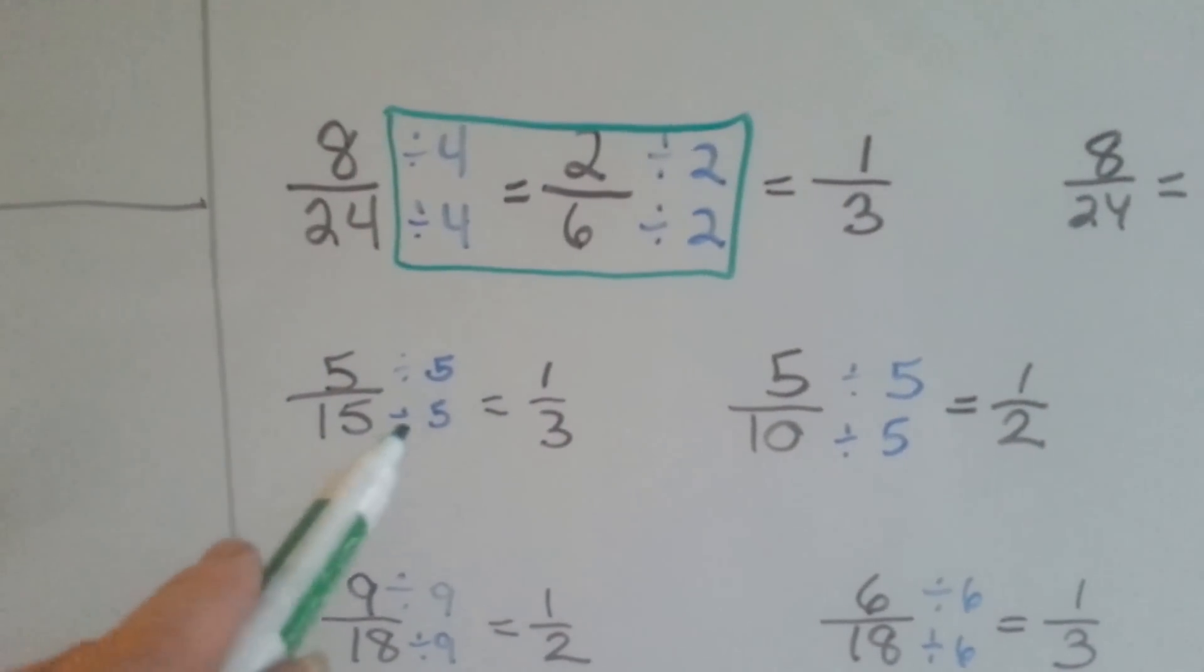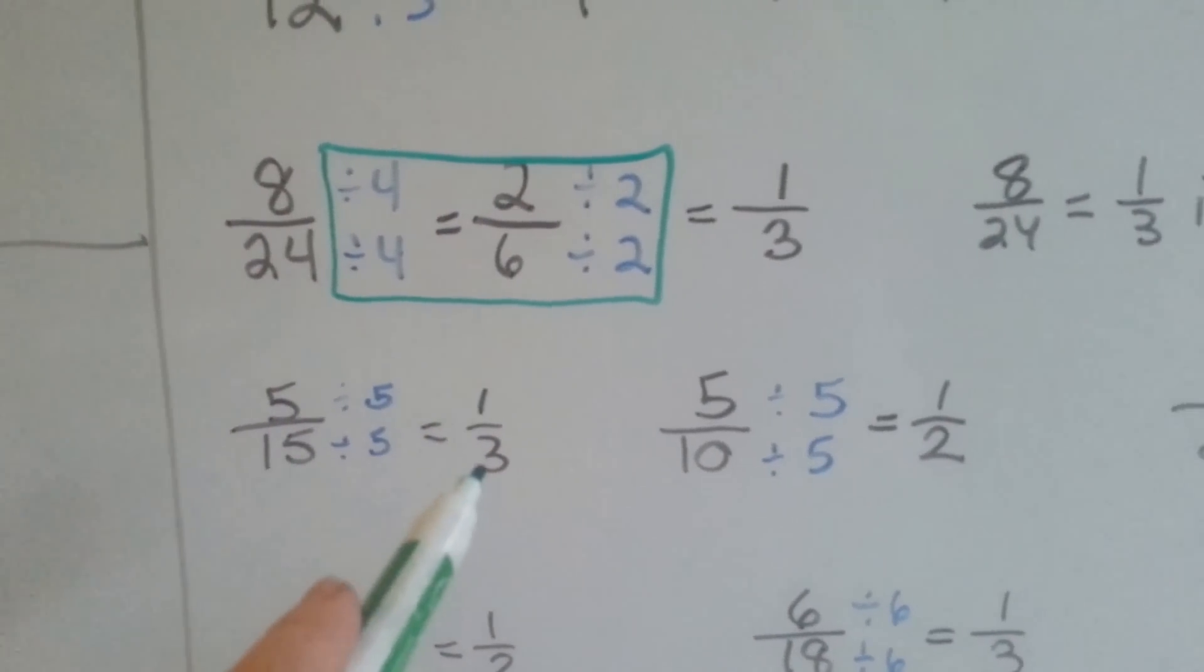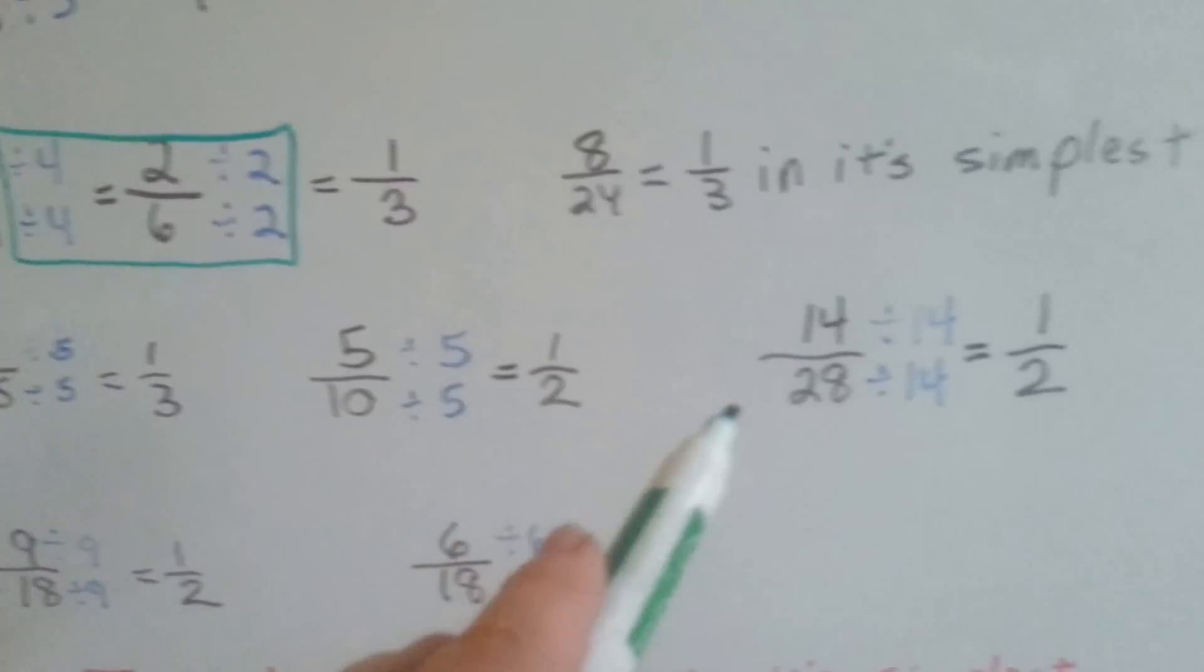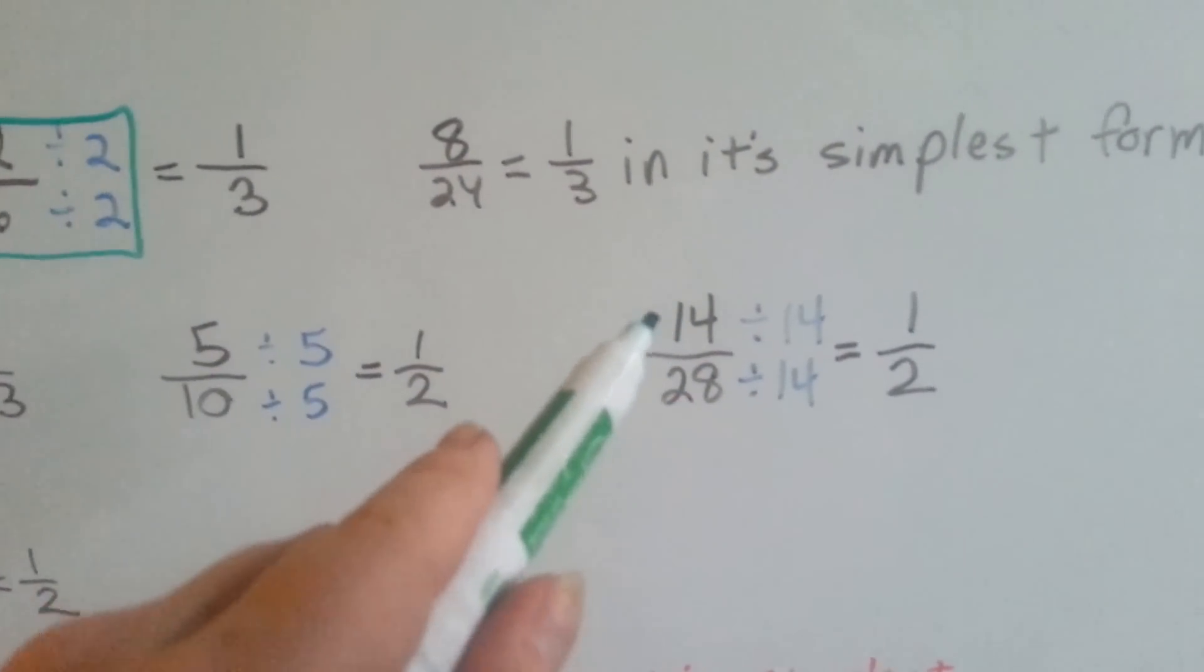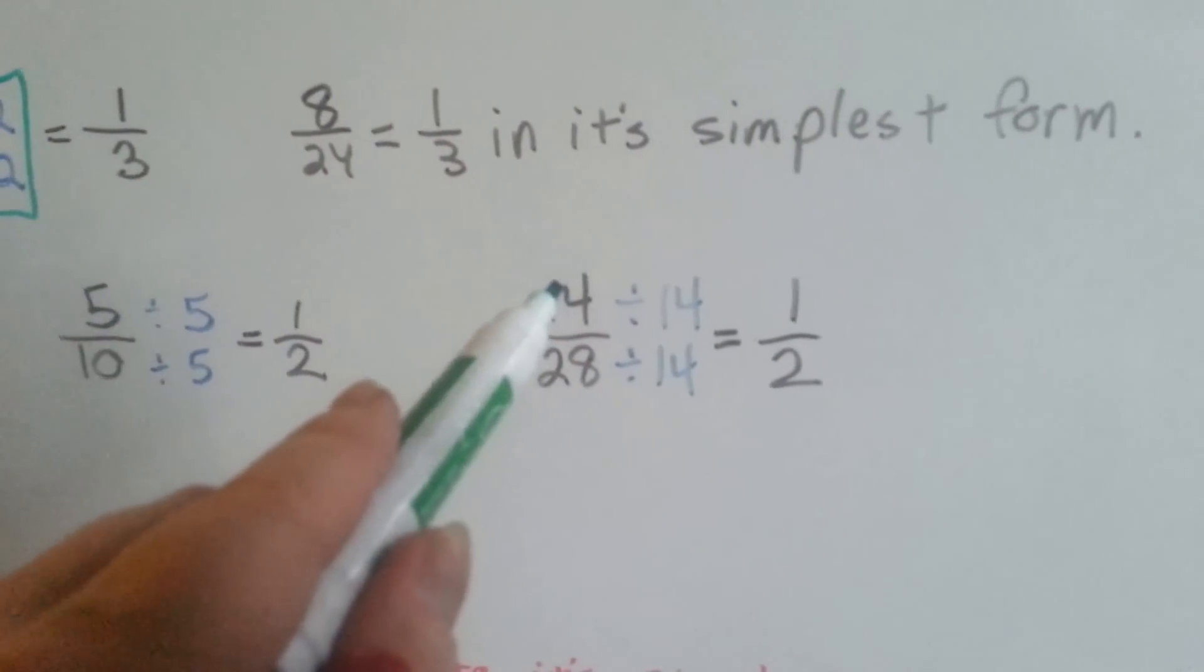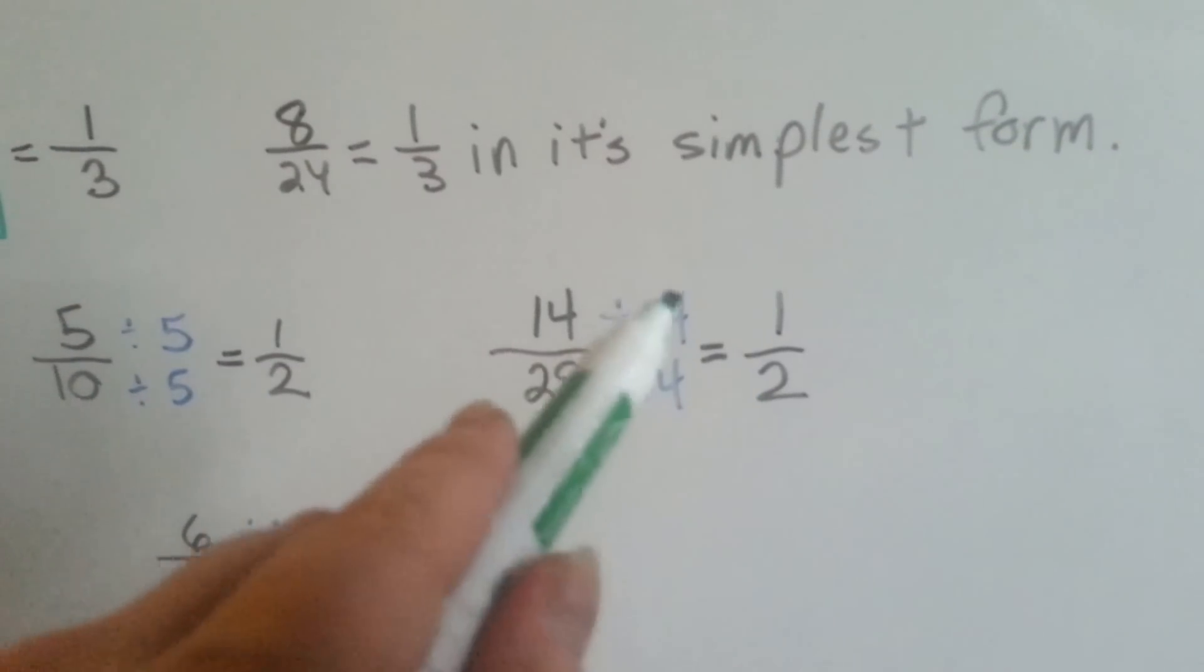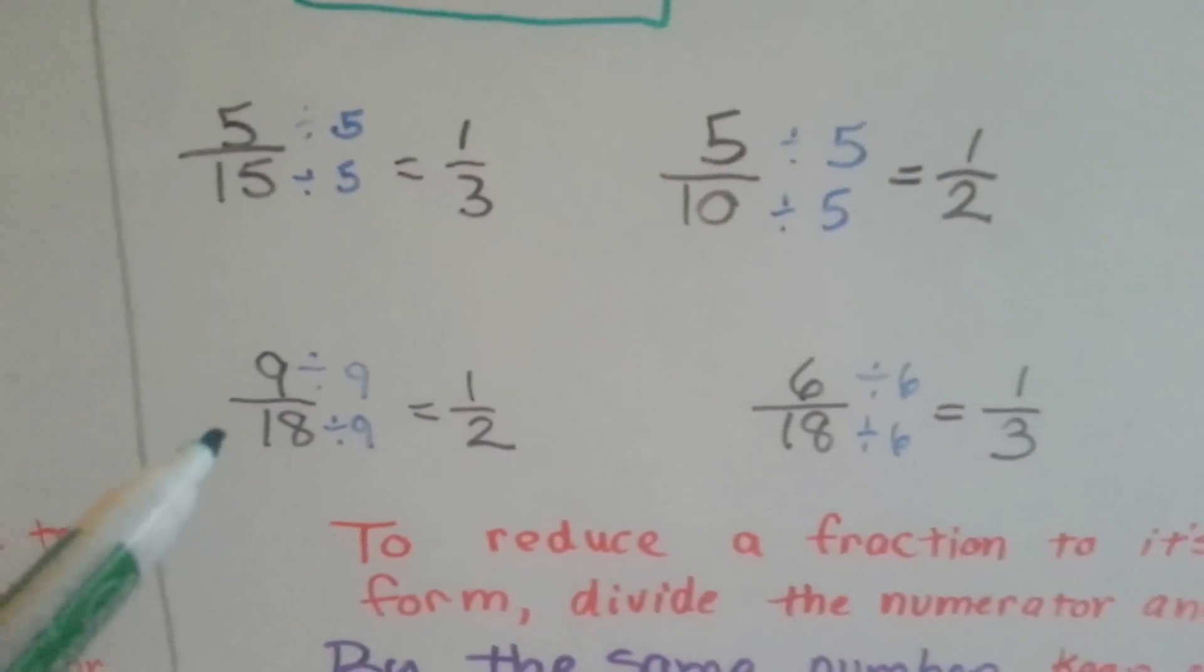5 fifteenths can be divided by a 5 with the numerator and denominator and become 1 third. 5 tenths can be divided by 5 and become 1 half. 14 twenty-eighths. Now what if we had divided the 14 and the 28 by 7? We would have created extra work, wouldn't we have? 14 and 14 is 28. So we know 14 twenty-eighths is 1 half. We can divide both by 14.